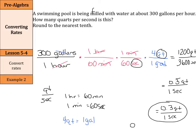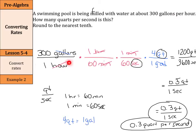You could also write this as 0.3 quarts per second. So what did we really do? We started with 300 gallons per hour. Then we said, let's get our hours into seconds — 1 hour is 60 minutes, 1 minute is 60 seconds — and set it up so units cancel to get down to seconds. Then we looked at gallons: 4 quarts is a gallon, canceled out the gallons, multiplied the tops, multiplied the bottoms, and simplified to get our final answer.